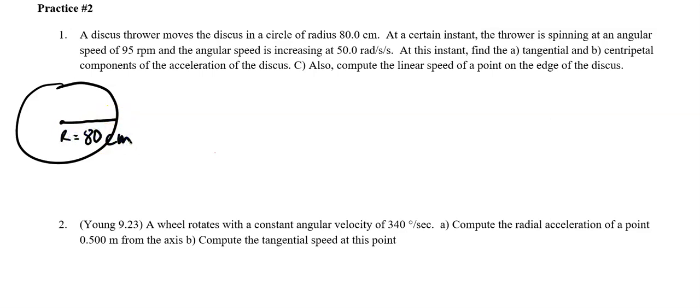I already know right off the bat, I usually want my units of meters. I'm going to call this 0.8 meters just because I know I'll need that in the future. The disk is spinning at an angular speed of 95 RPMs, and the angular speed is increasing at 50 radians per second squared.